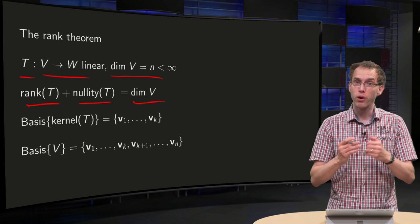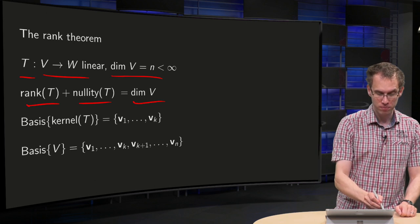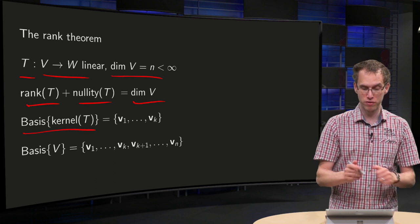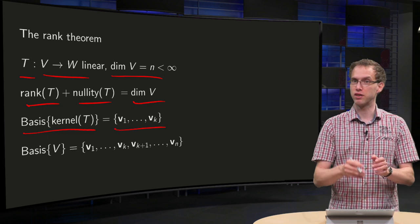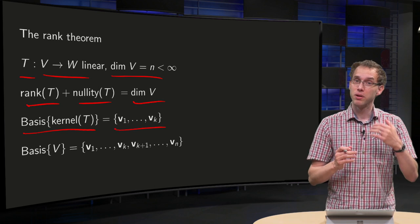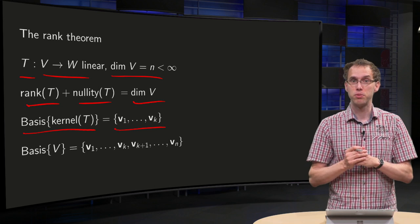What's the idea? Well, the kernel is a subspace, so it has a basis. So, the basis of the kernel of T consists of, say, k vectors, v1 up to vk. Now, this is a subspace of V.